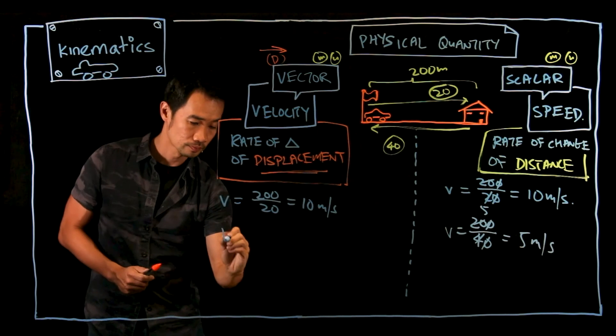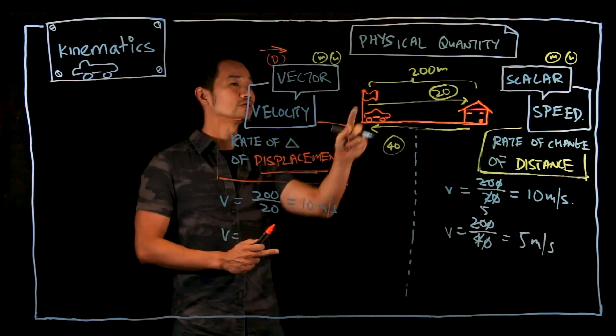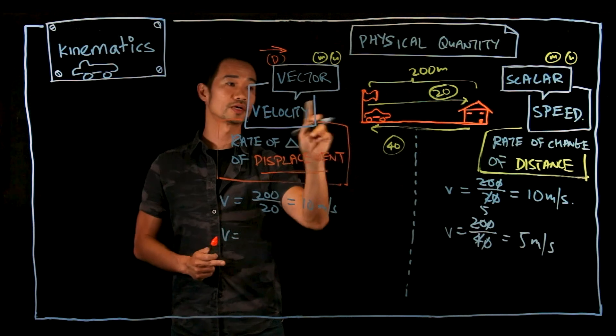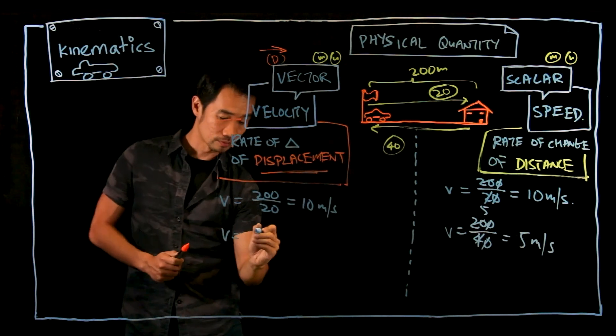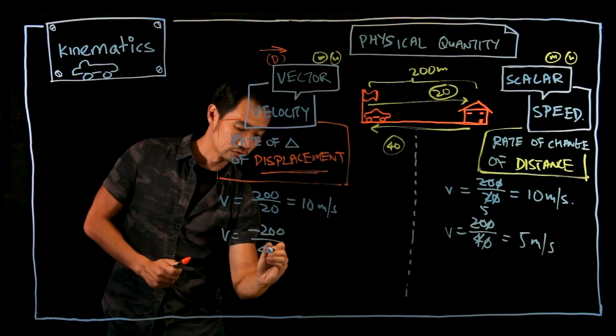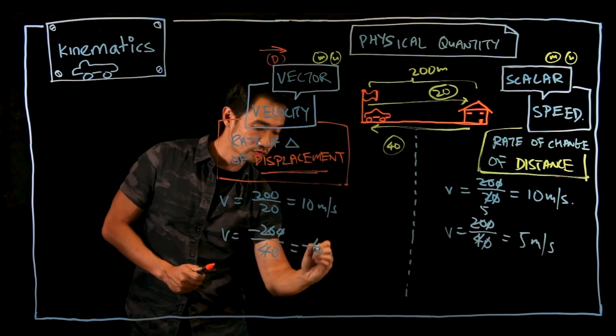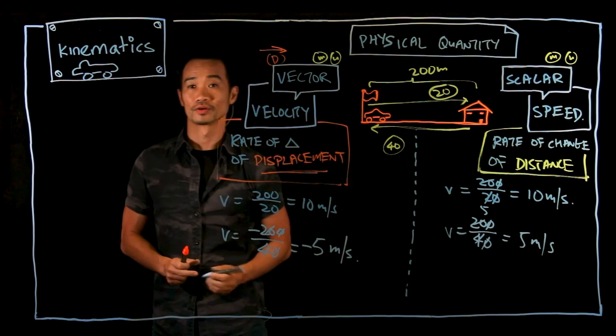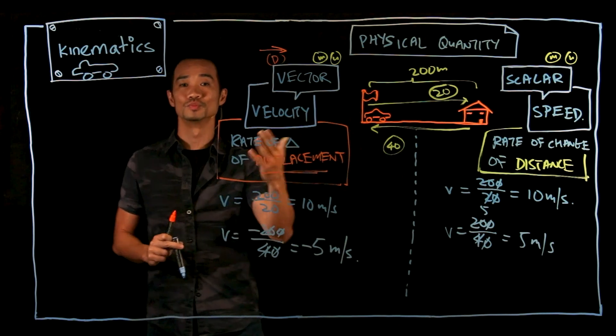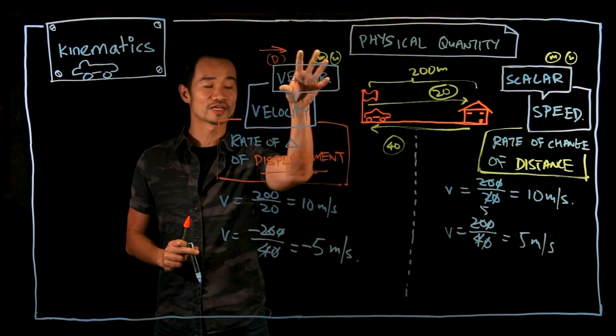But for velocity, in this case now displacement, is it going to be plus 200 or minus 200? Because right now it is going in an opposite direction. So you get minus 200 over the time taken of 40. So you will get minus 5 meters per second. It doesn't mean that it is slowing down. It just means that it is moving in the opposite direction.